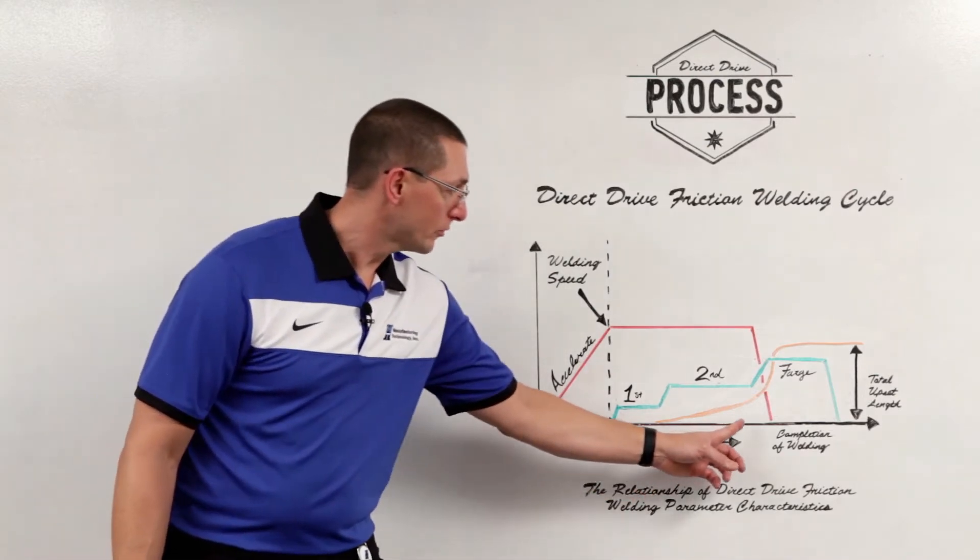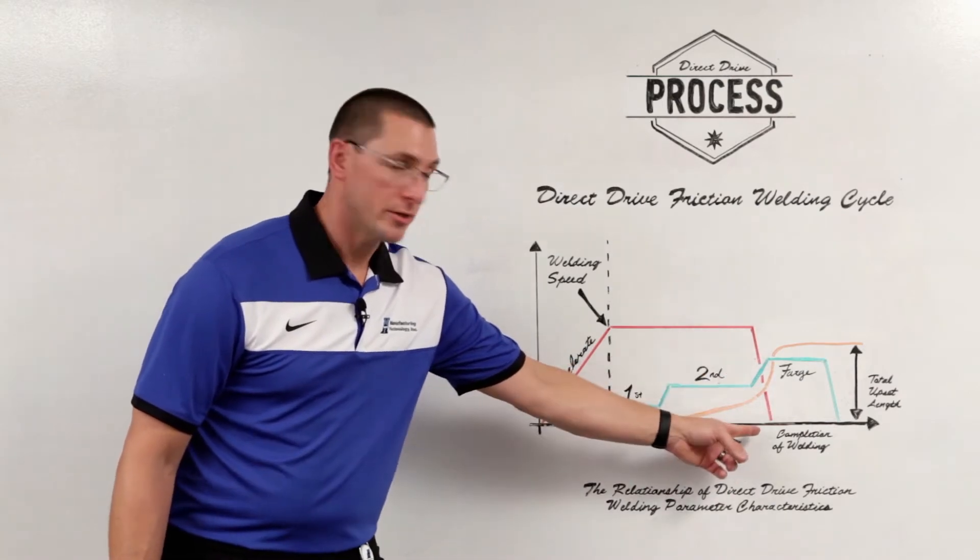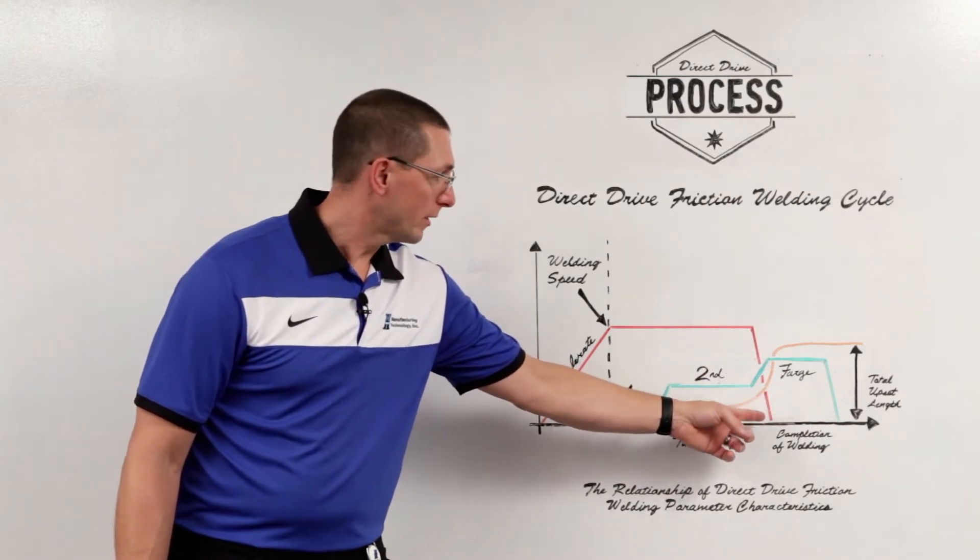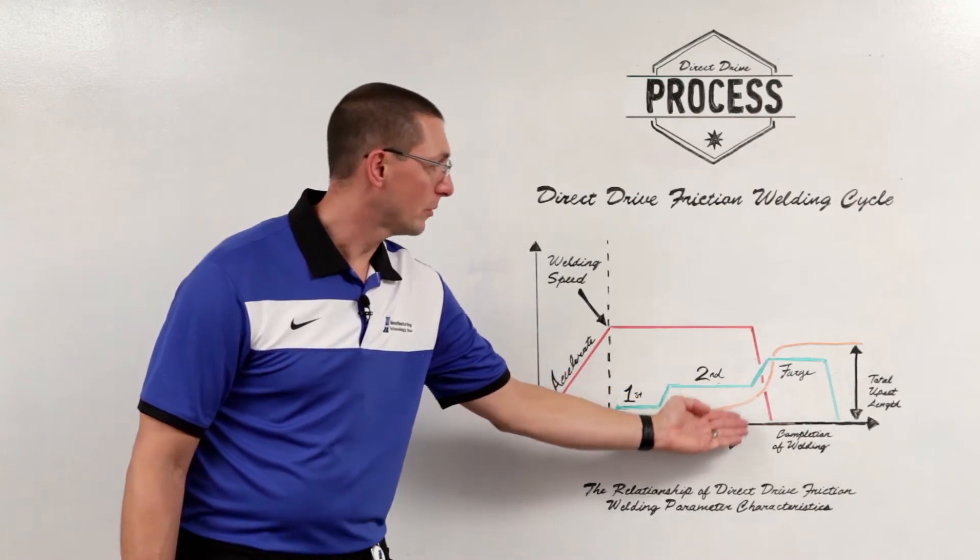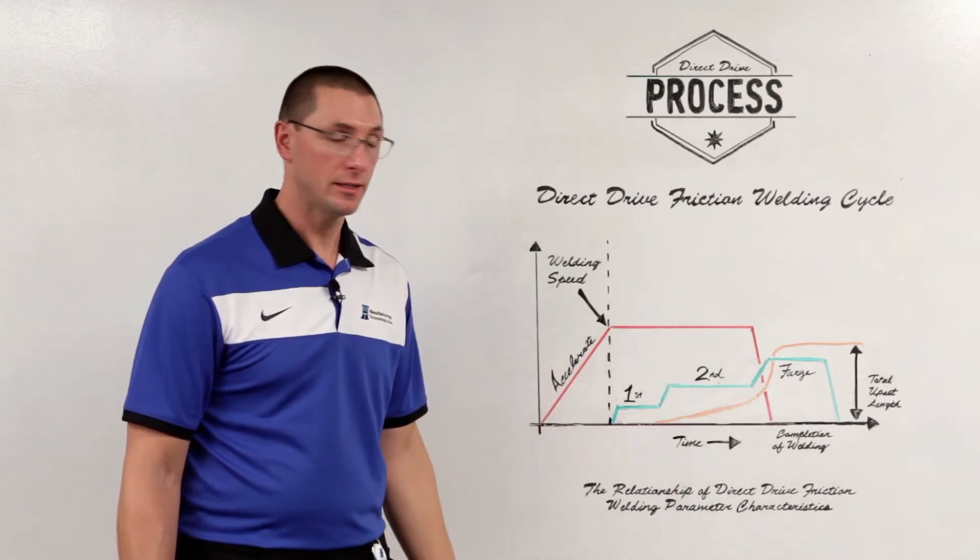Once we've had a certain amount of upset from the part, we decrease our energy input, we break the spindle down to zero speed, and we bring on the full forge load needed to make the weld.